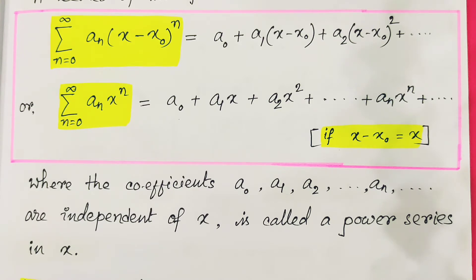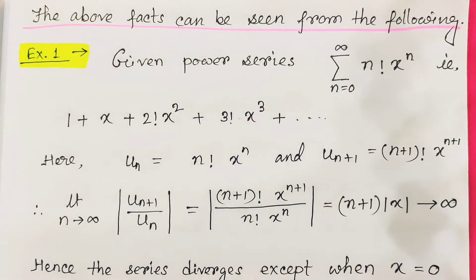It is also possible that the series converges within a certain interval of x. That particular interval is called the interval of convergence, and the endpoint value of that interval is called the radius of convergence. So we have four situations: convergent at x=0 only; nowhere convergent; everywhere convergent; and convergent within some interval.